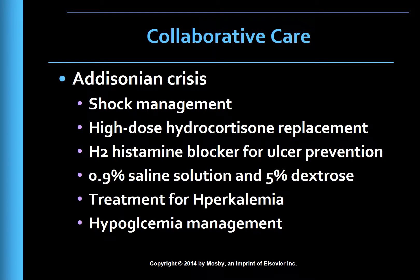Addisonian crisis is a life-threatening emergency necessitating aggressive treatment directed toward shock management and high-dose hydrocortisone replacement. With high doses of steroids, initiate intravenous H2 receptor blockers. Large volumes of normal saline solution and dextrose are administered to reverse hypotension and electrolyte imbalances until blood pressure returns to normal. Treatment should also address hyperkalemia and hypoglycemia.